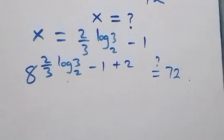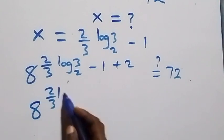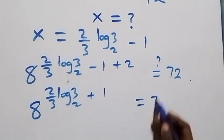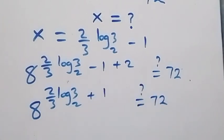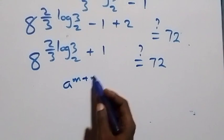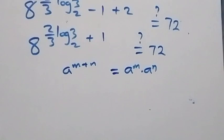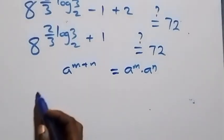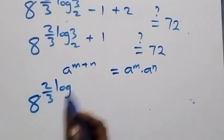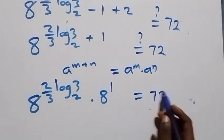From here, minus 1 plus 2 is 1, so we have 8 raised to power (2 over 3 log base 2 of 3 plus 1) equals 72. We apply the rule a raised to power m plus n equals a raised to power m times a raised to power n, so this becomes 8 raised to power (2 over 3 log base 2 of 3) times 8 raised to power 1, equals 72.